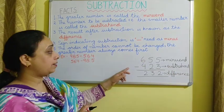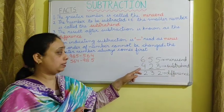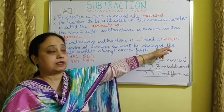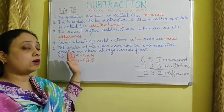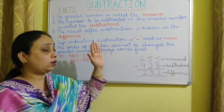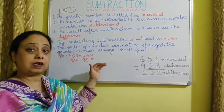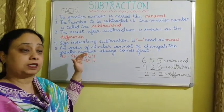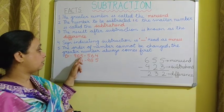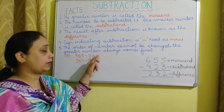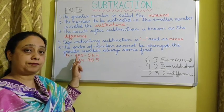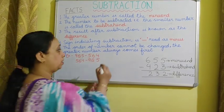The sign we use for subtraction is this, and it is read as minus. The order of numbers in subtraction cannot be changed. The greater number is placed first. For example, if we have 985 minus 564, we have placed the greater number first and then the smaller number.